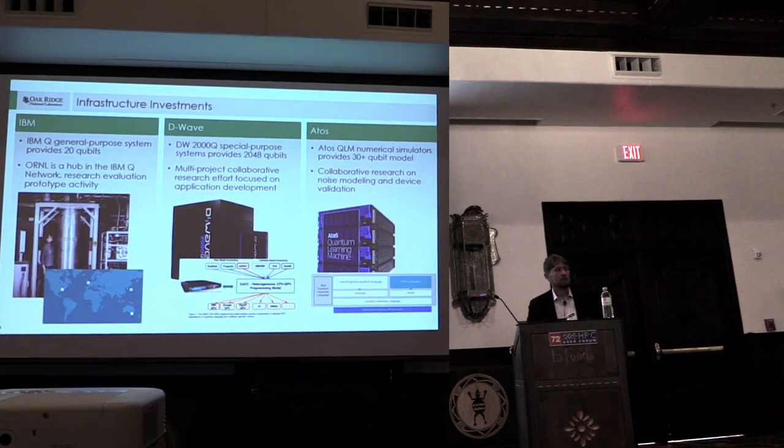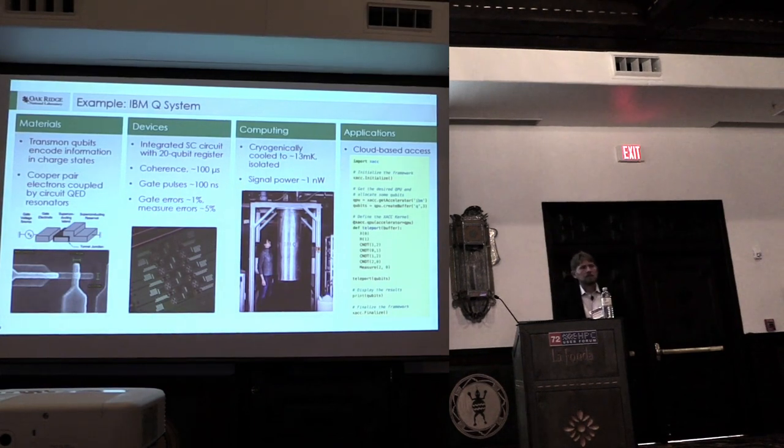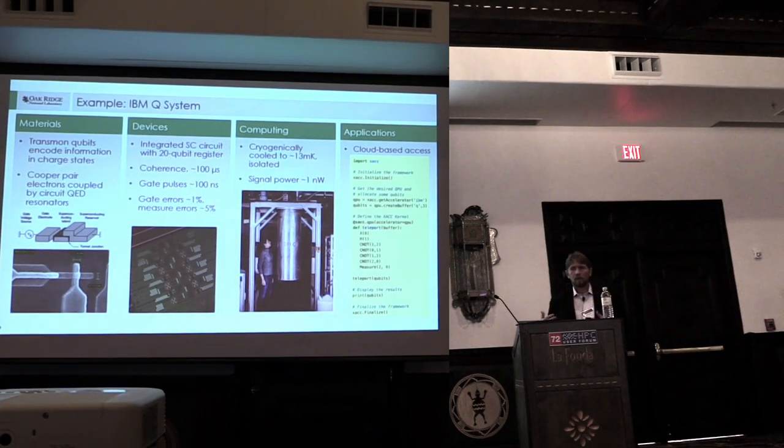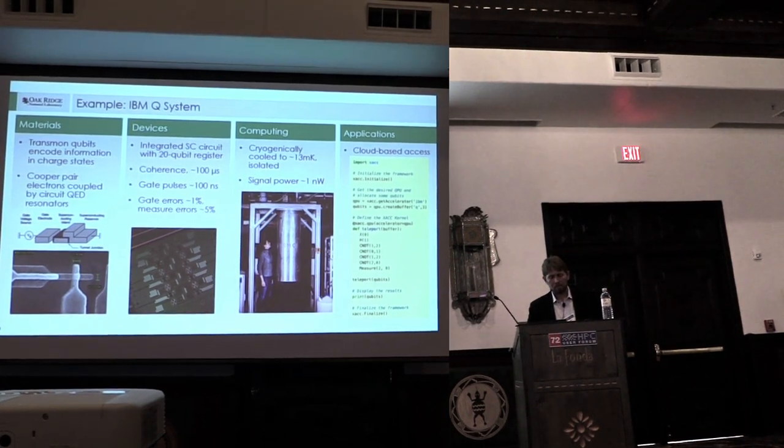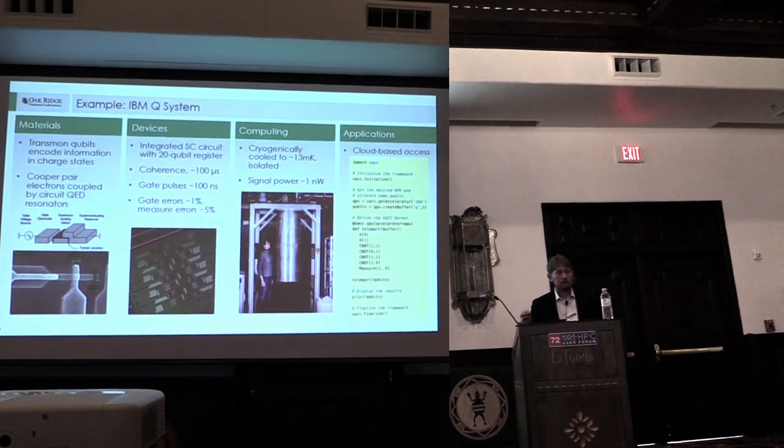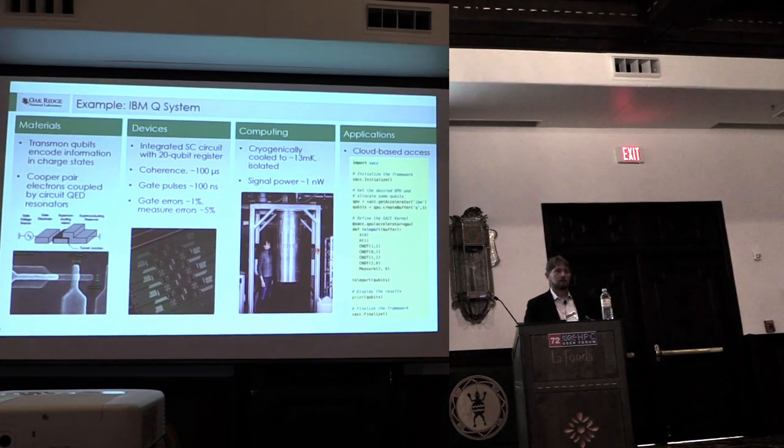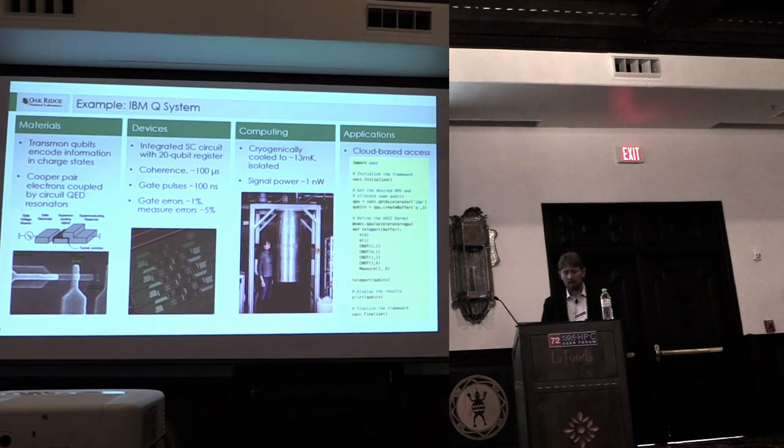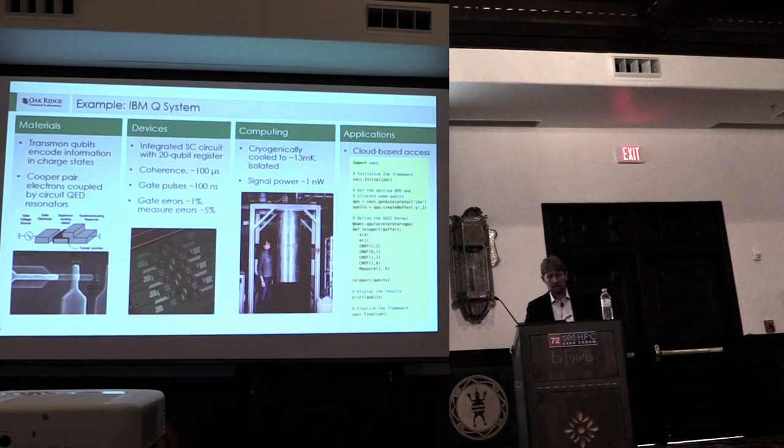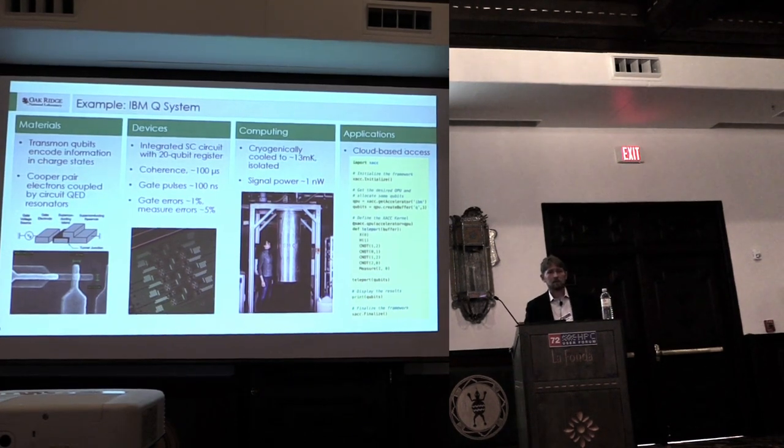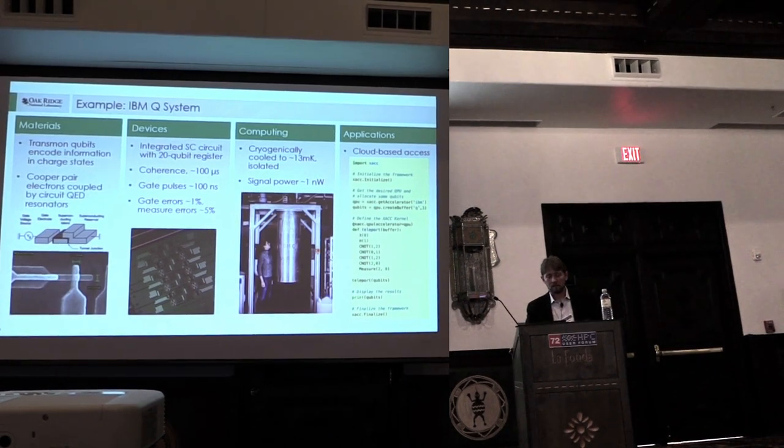And then finally, there's numerical simulation. So just conventional numerical analysis of how quantum systems work. We've actually bought a system from Atos, which develops a numerical simulator that we have now put on site. However, because of the challenges in simulating these types of systems, that is not a system that's going to scale over time. And currently tops out around 30 qubits in terms of its simulation capability. So let me just walk you through how these pieces go together and how we interact with them. This is the example using the IBM Q system. On the far left, you'll see the materials. And this is really where the quantum mechanics is important.